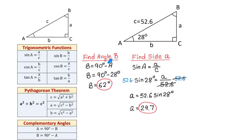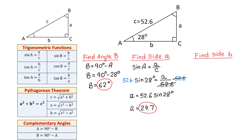So far we found angle B and side A; now we have to find side B. We can use the formula cosine of angle A equals B over C, or since we already know angle A, angle B, side A, and hypotenuse C, we could use any trigonometric function that includes side B. For example, we could use tangent of angle B equals side B over side A, replacing angle B with 62 degrees and side A with 24.7 units. Another option is to use the Pythagorean theorem: B equals the square root of C squared minus A squared, and this is what we will use.